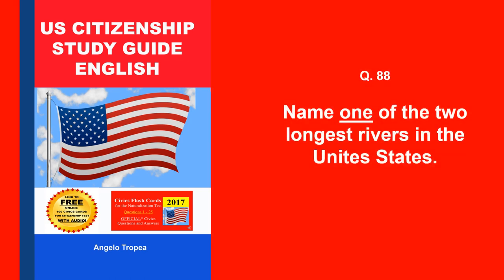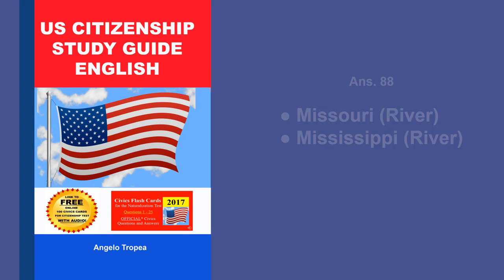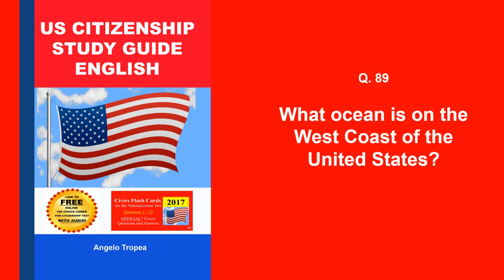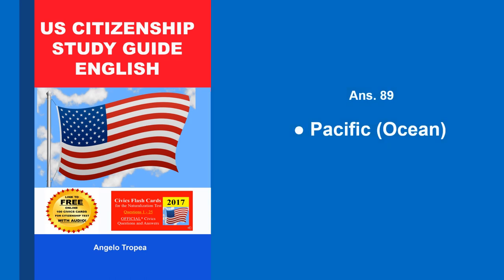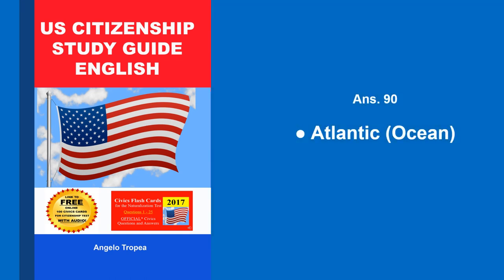Name one of the two longest rivers in the United States. Missouri River. Mississippi River. What ocean is on the west coast of the United States? Pacific Ocean. What ocean is on the east coast of the United States? Atlantic Ocean.